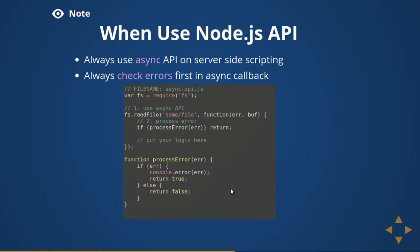In most Node.js cases you will see a callback associated with a particular task. For example, when reading a file, you attach a callback — once the operation is done, it will execute the code written inside it. Always use async API on server-side scripting. A best practice: always check errors first in the async callback. The first argument should be the error object and the second should be the response object.